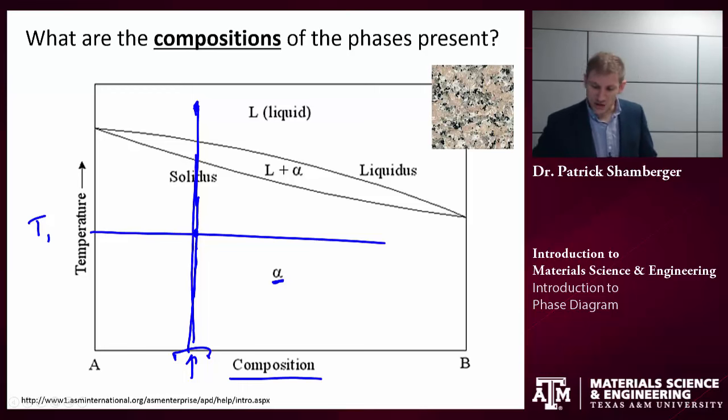It gets interesting when we look at points in two-phase regions. If I'm in a two-phase region, the first thing to do is draw a horizontal line from one phase boundary to the other — this is called a tie line. Anytime you're in a two-phase region, draw this tie line first, because it tells us the compositions of the two phases in equilibrium at that temperature. The tie line intersects the solidus over here, giving the composition of the solid. The tie line intersects the liquidus over here, giving the composition of the liquid.